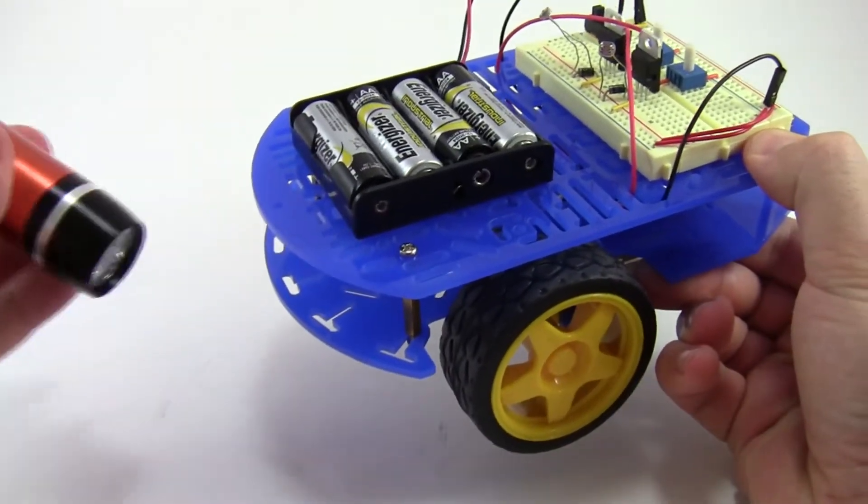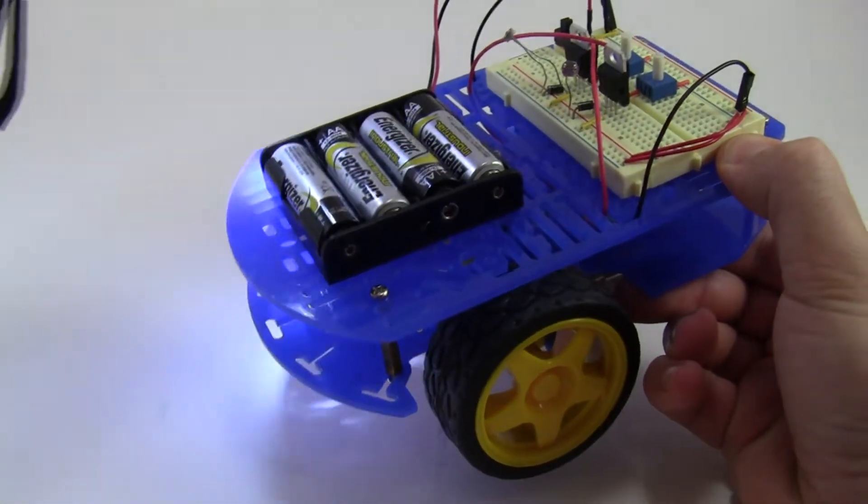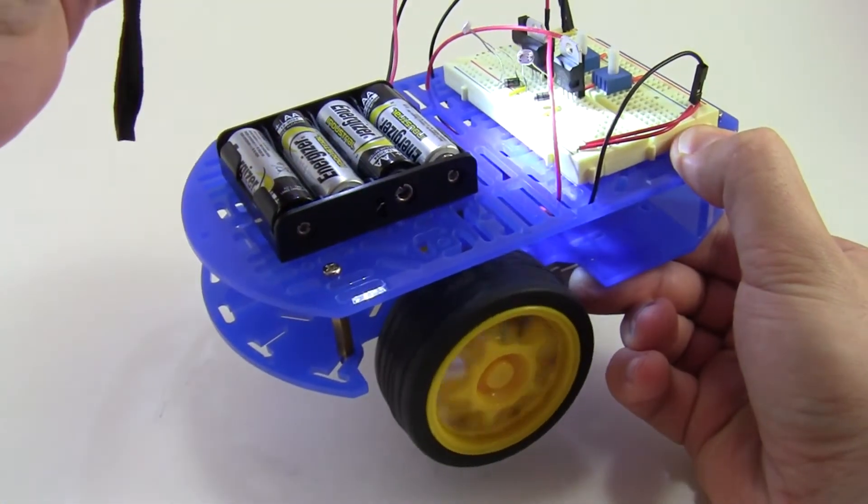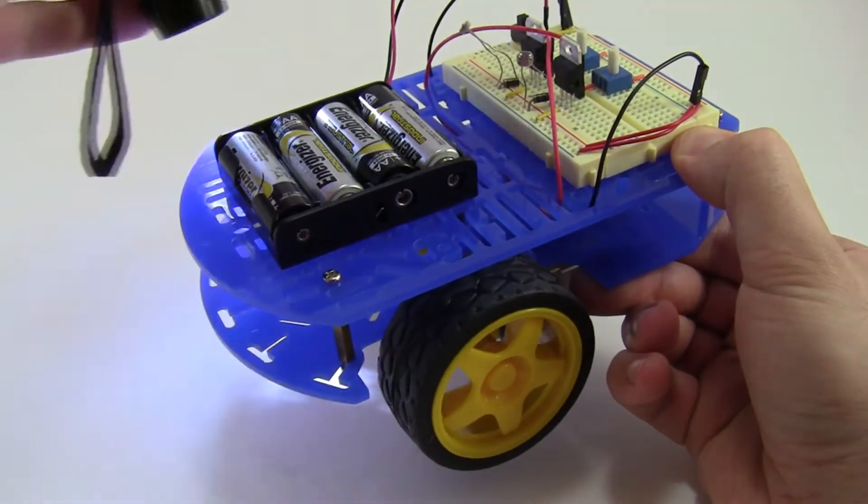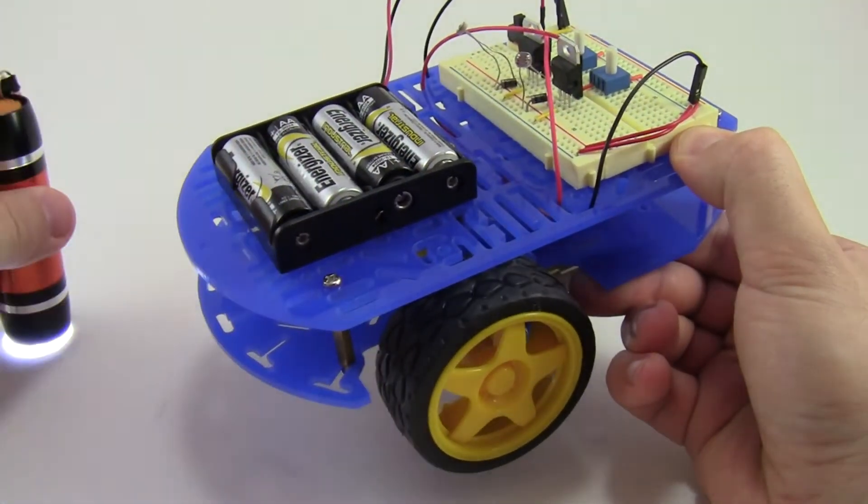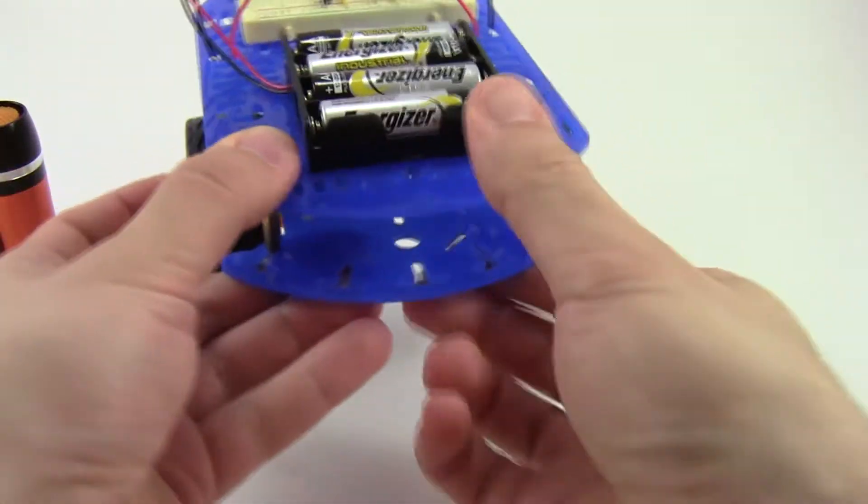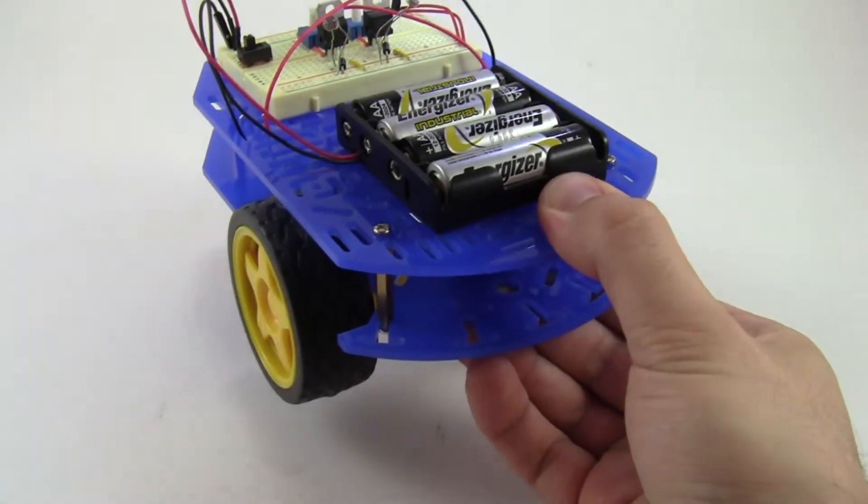Watch what happens when I aim a flashlight at the light sensors one at a time. Each light sensor causes the motor on the other side of the robot's body to spin. This means that when only one light sensor detects light, the wheel on the other side of the robot spins forward, causing it to turn towards the light.